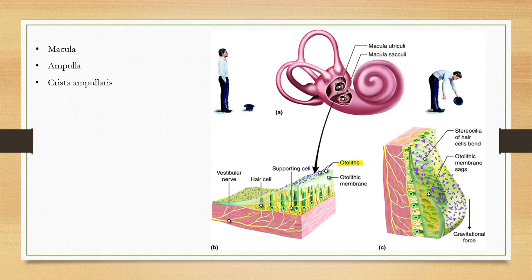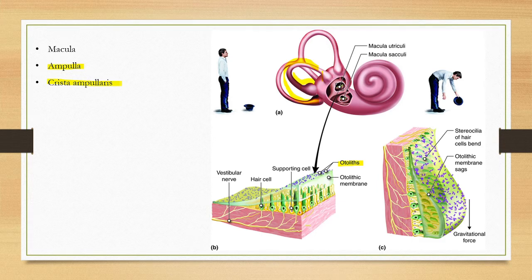The second balancing organ is the ampulla. The ampulla is a swelling at the beginning of the semicircular canal. The balancing organ inside the ampulla is called the crista ampullaris. The function of the ampulla is to maintain body balance and equilibrium. So the semicircular canal balancing organ is the crista ampullaris, and the utriculus and saccule balancing organ is the macula.